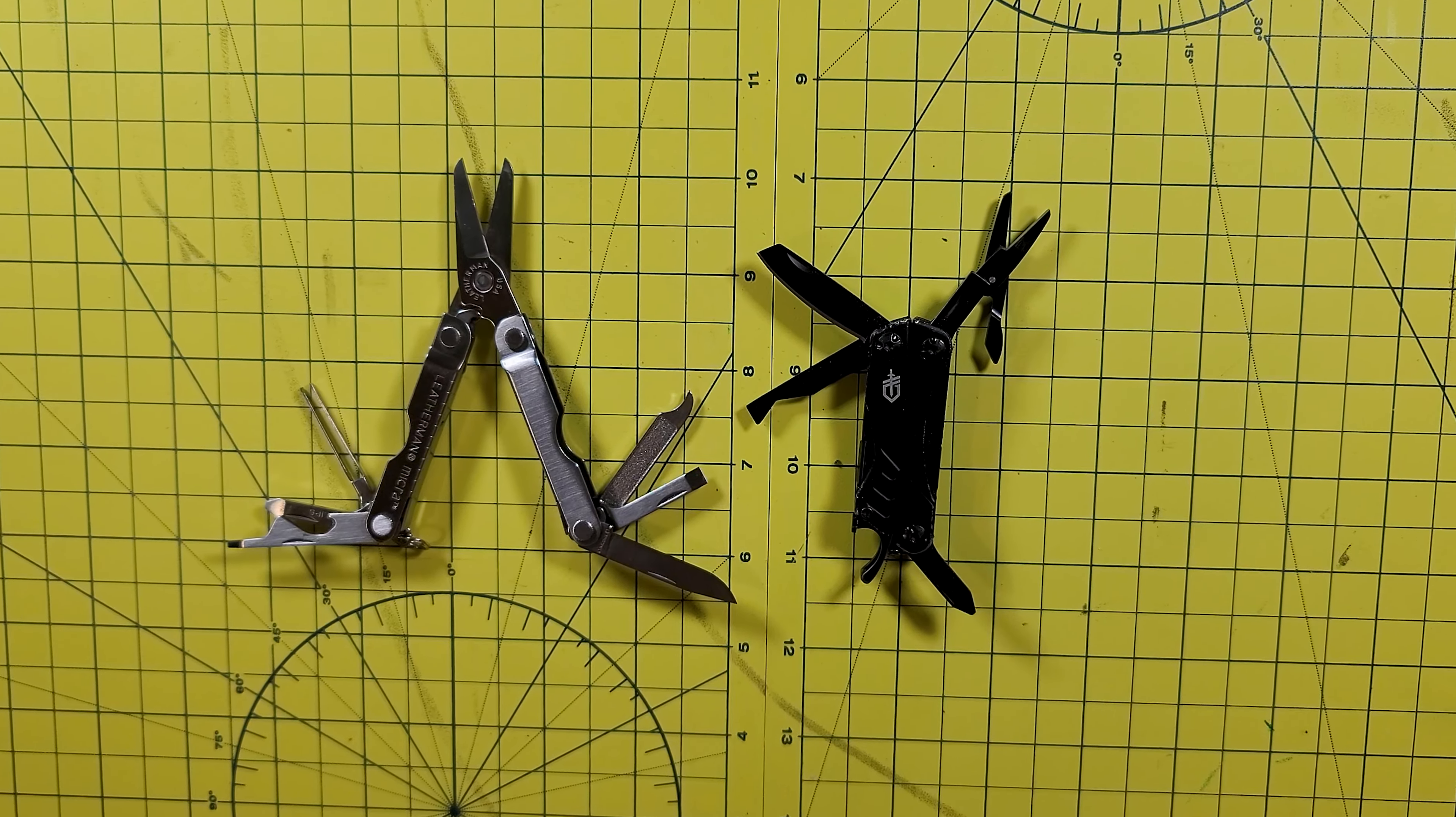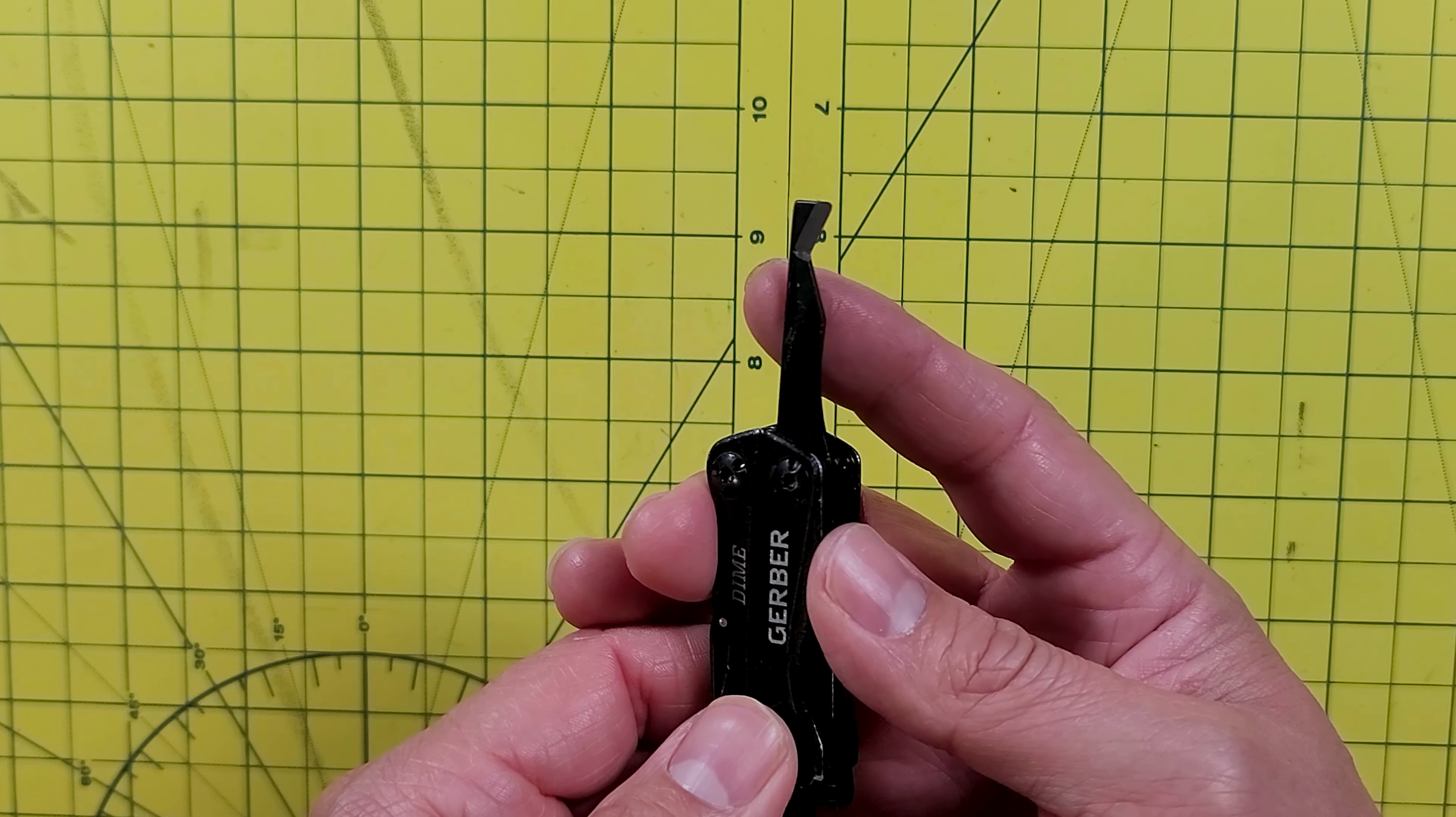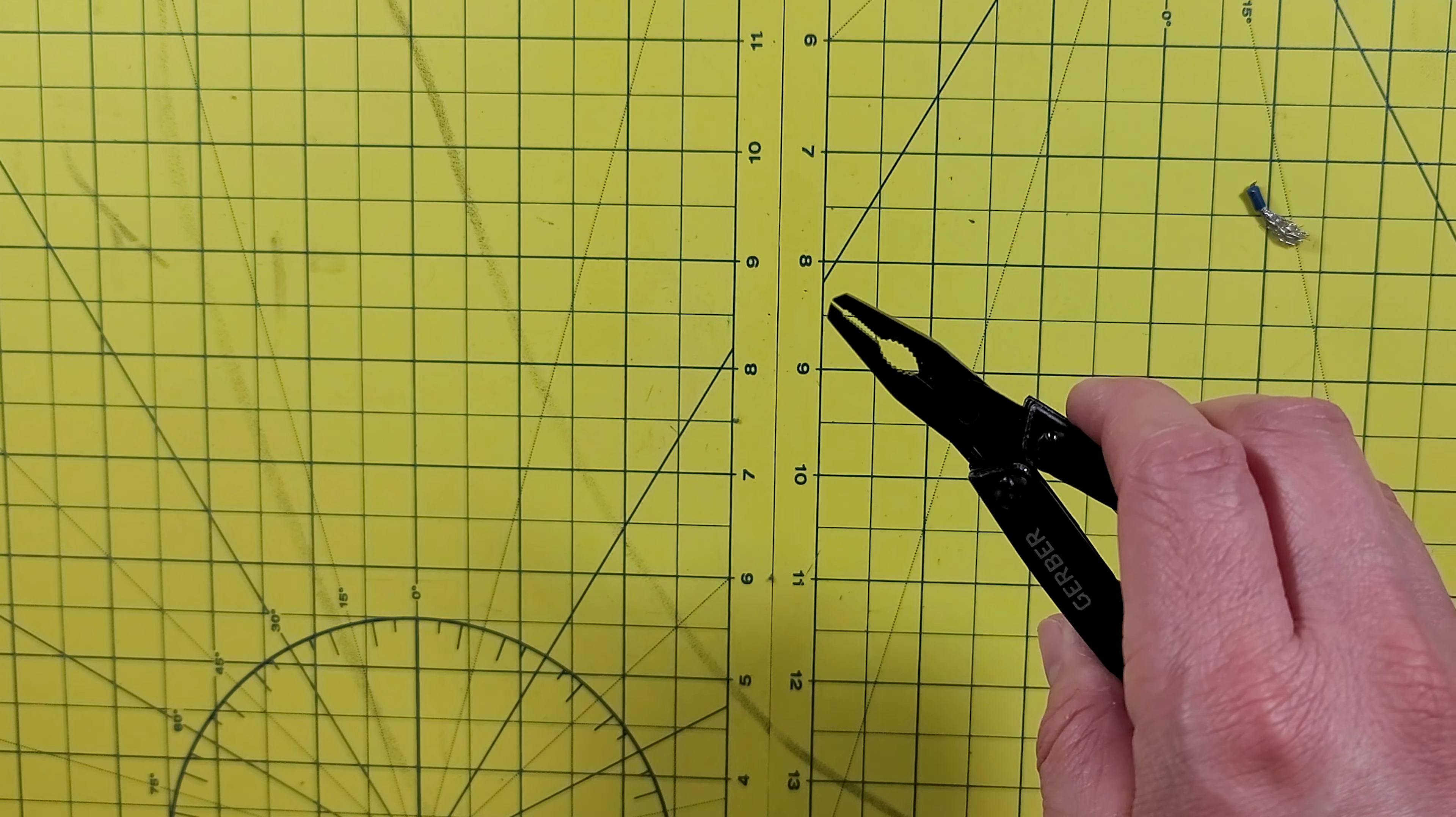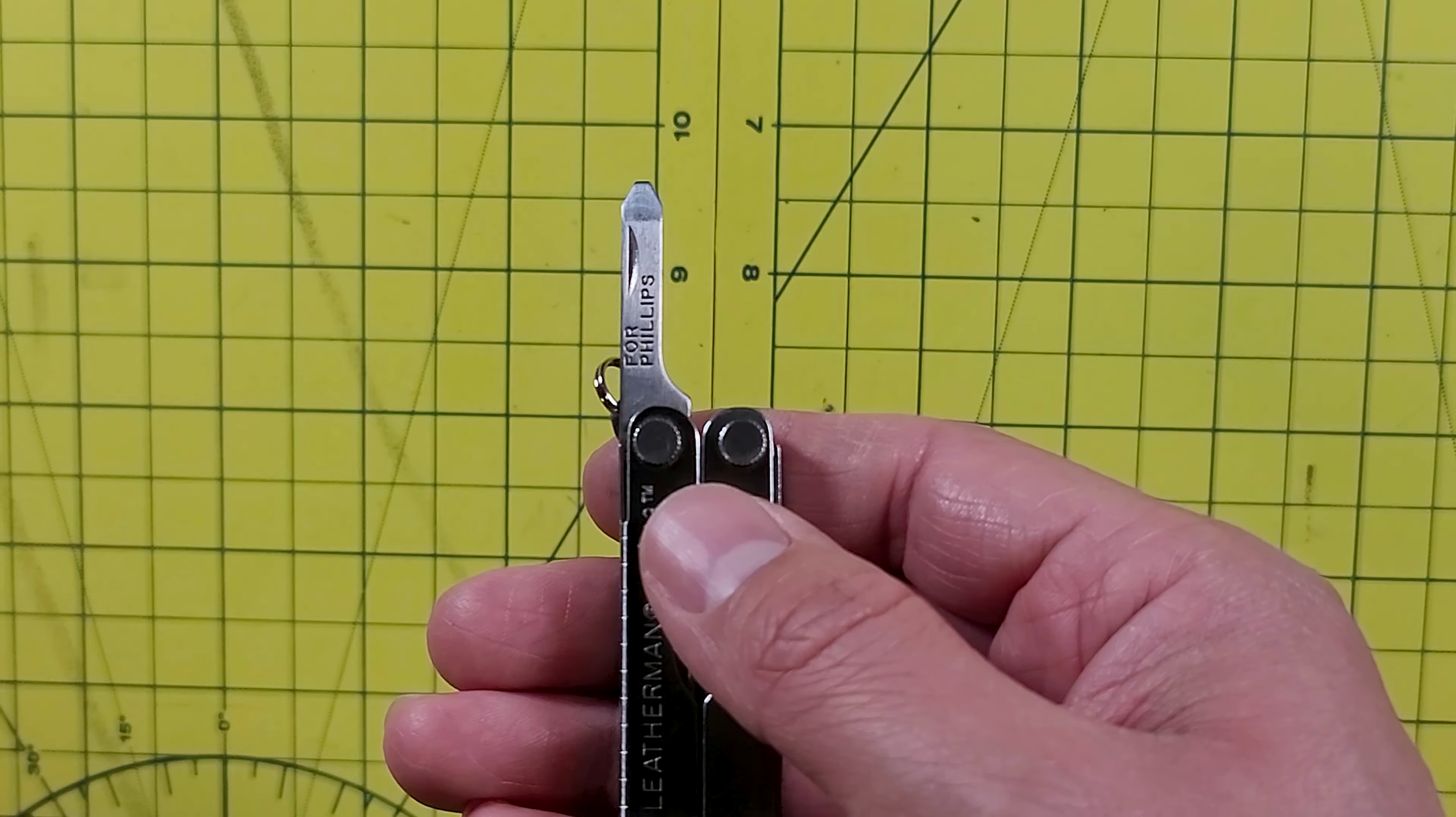Now let's take a look at the additional tools that each one has and see which ones are more useful. On the Dime side, you have the following additional tools: the retail package opener, wire cutters, and the spring-loaded pliers. On the Micro side, you have the following additional tools: flat Phillips screwdriver, ruler, and nail cleaner. First, let's take a look at the tools on the Micro.